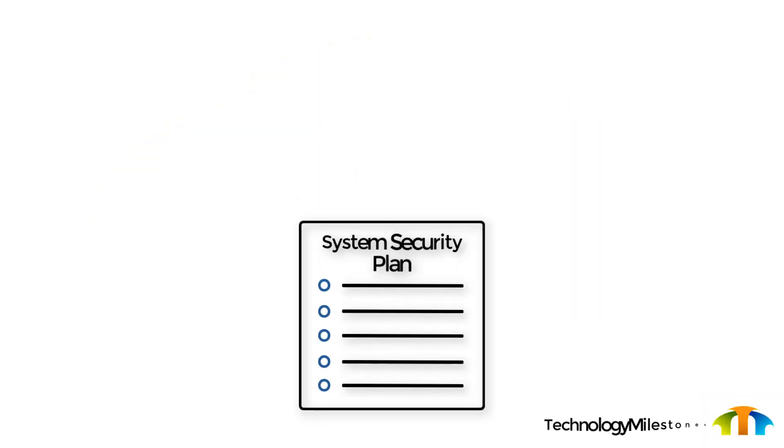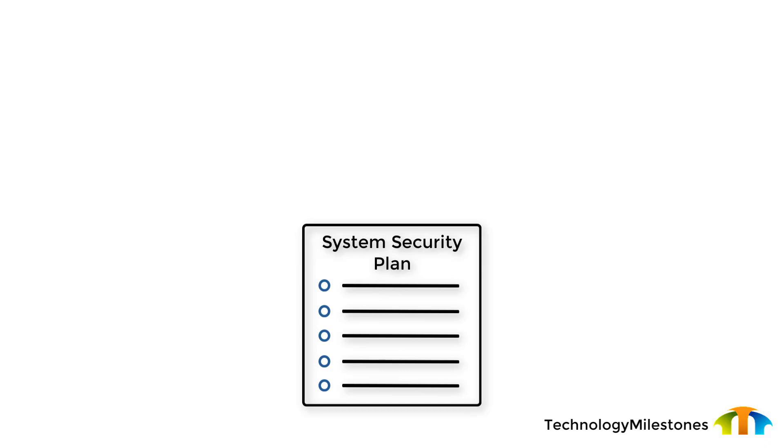A system security plan is the first thing that you're going to be asked if your environment is compromised. For many environments, it's going to be a requirement on many different levels — from GDPR, DFARS, and all types of regulatory compliance for your users and consumers of your services. Whether you're a plumber or a high-end IT firm, a system security plan is essential. Today, we're going to walk through some of those key attributes of a system security plan.